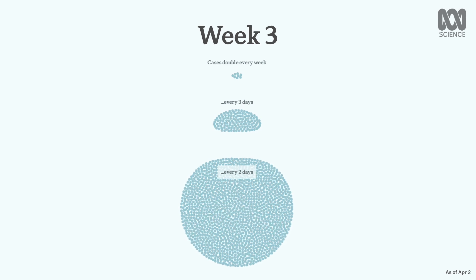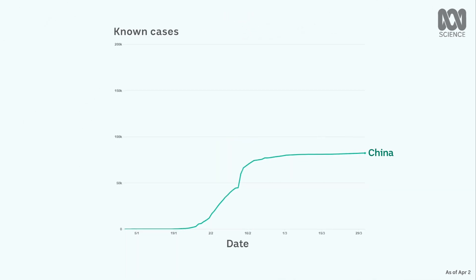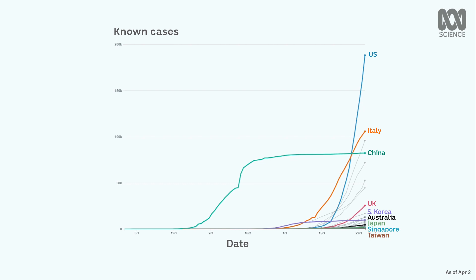How does that play out in the real world? First, let's look at the source of the outbreak — China. In China, the virus initially spread exponentially, with the number of known cases repeatedly doubling in less than two days during the early part of the outbreak. But the country appears to have reduced that growth. Now coronavirus is spreading much more quickly in other parts of the globe.